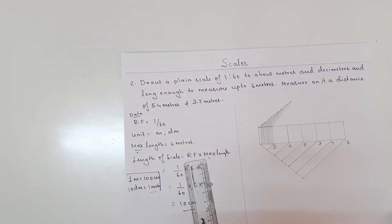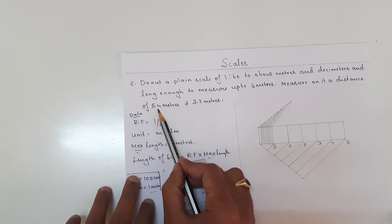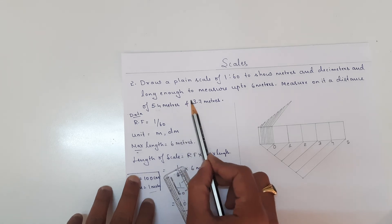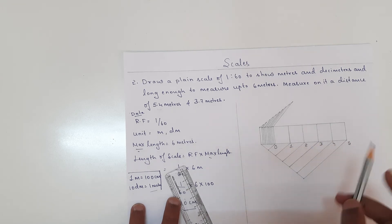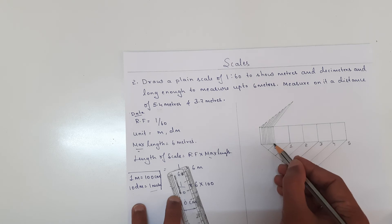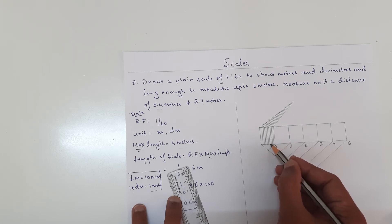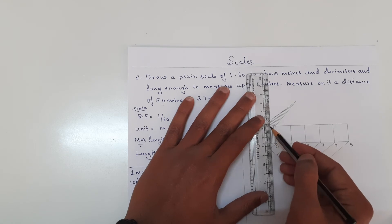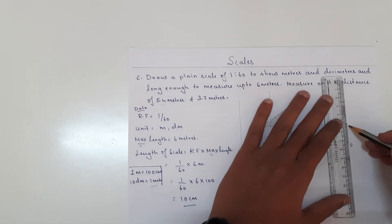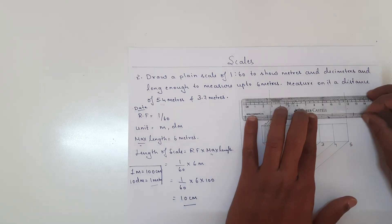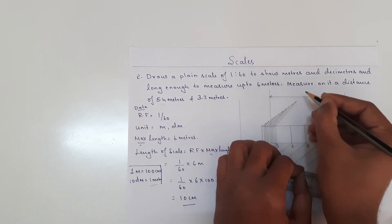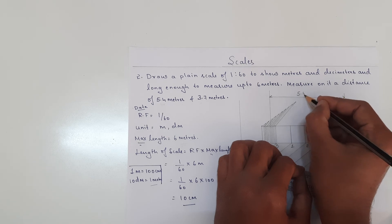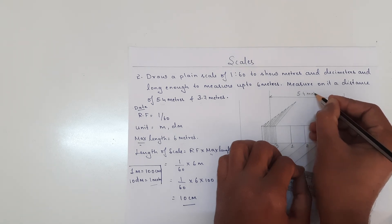Now we need to show 5.4 meters. To represent 5.4, we count 0 to 1, 2, 3, 4, 5 meters, then 4 decimeters. This is how we represent 5.4 meters — that means 5 meters and 4 decimeters.